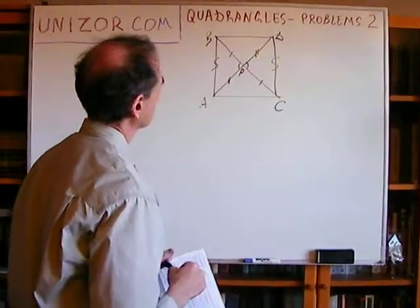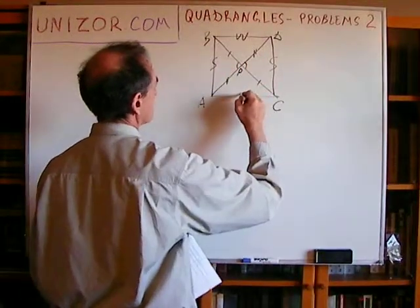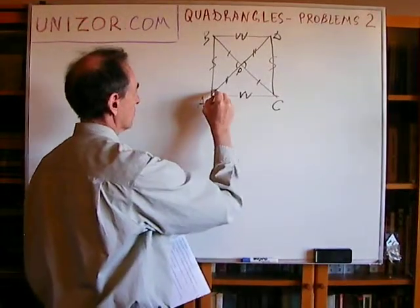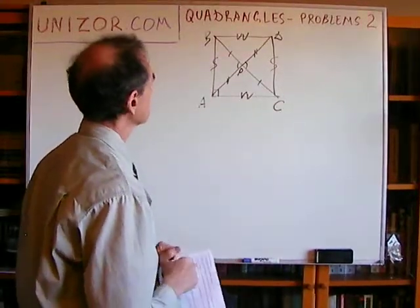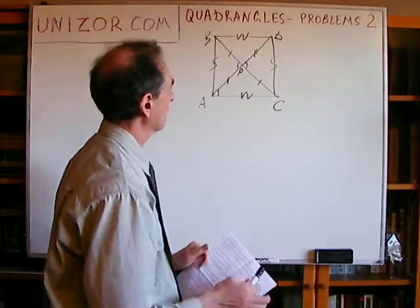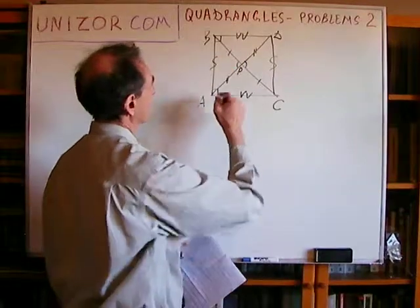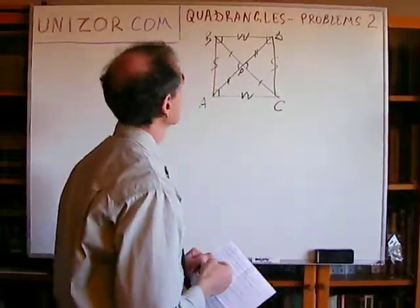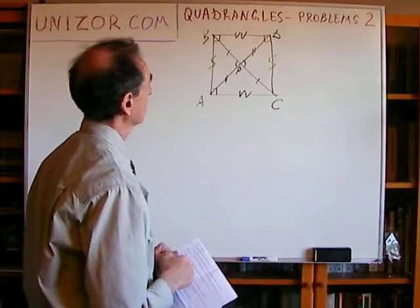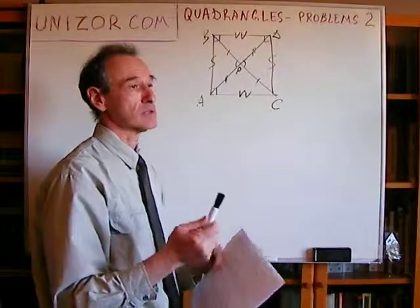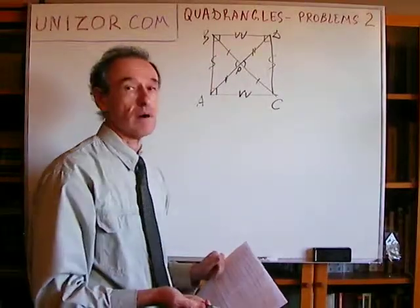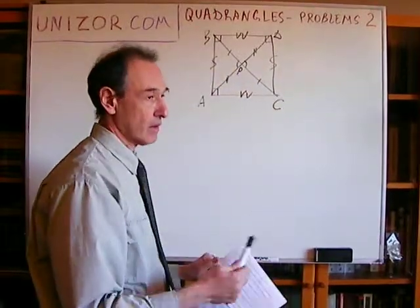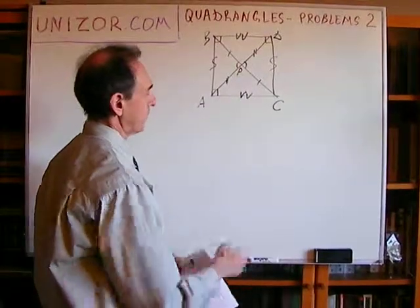That makes AB congruent to CD, and similarly BD congruent to AC. So it's a parallelogram. And it's not just a parallelogram — this angle is a right angle. Since interior angles of a parallelogram are either supplemental or congruent, that makes all angles right, so every angle is 90 degrees, making this a rectangle. Since it's a rectangle, its diagonals are congruent. But one diagonal is the hypotenuse and the other is double the median. If they are equal, then the median equals half the hypotenuse.